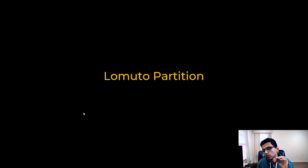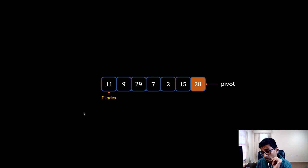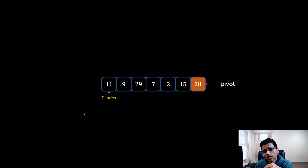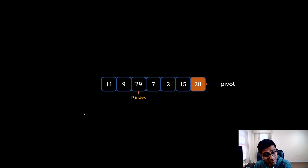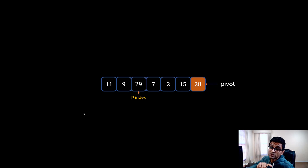There is also the Lomuto partition scheme. The way this works is you decide your end element as your pivot — though you can use the leftmost or middle element as well. The end element being pivot is very popular here. Your start element, 11, is called P index (partition index), and you keep moving P index until you find an element greater than pivot. I find 29: starting at 11, moving to 9, then 29. Now 29 is greater than 28, so we stop. Remember, in this whole partition process we compare every element with pivot only.